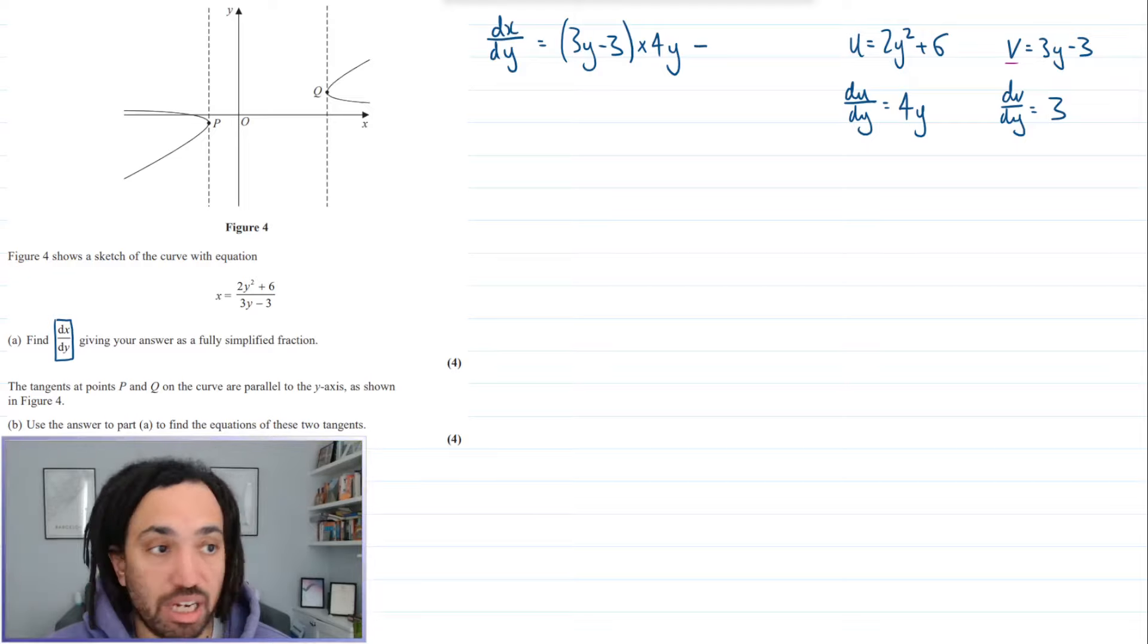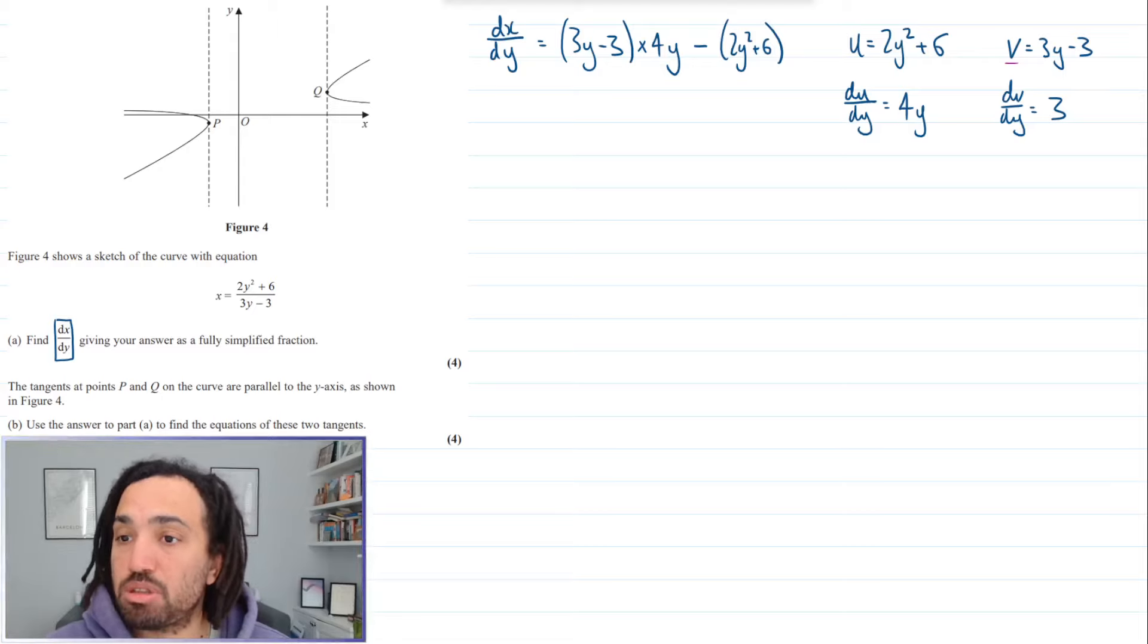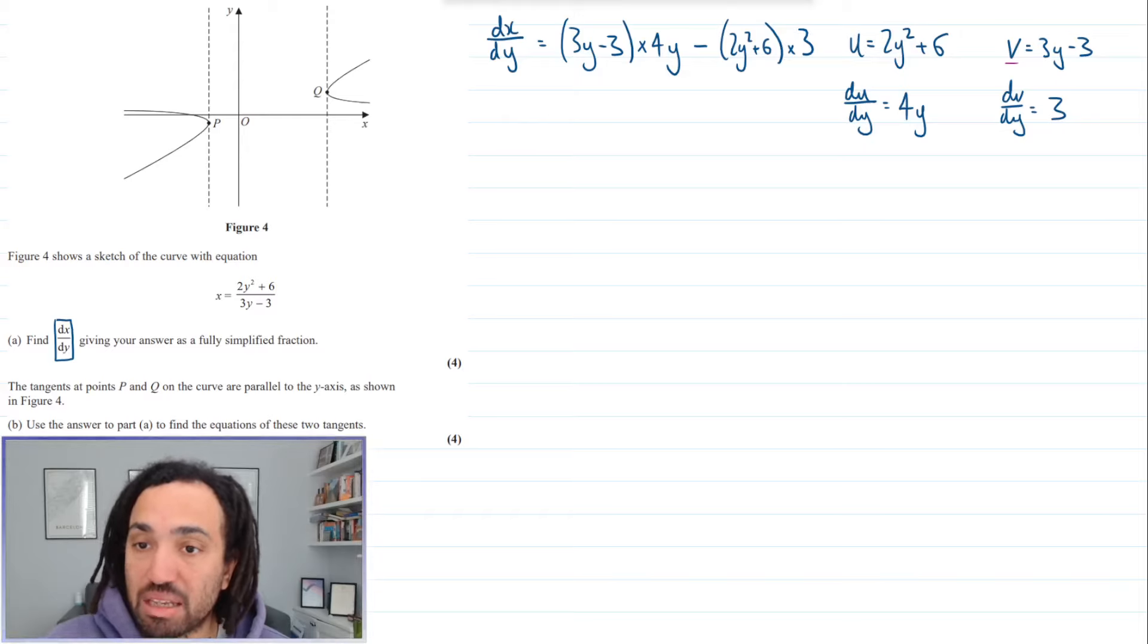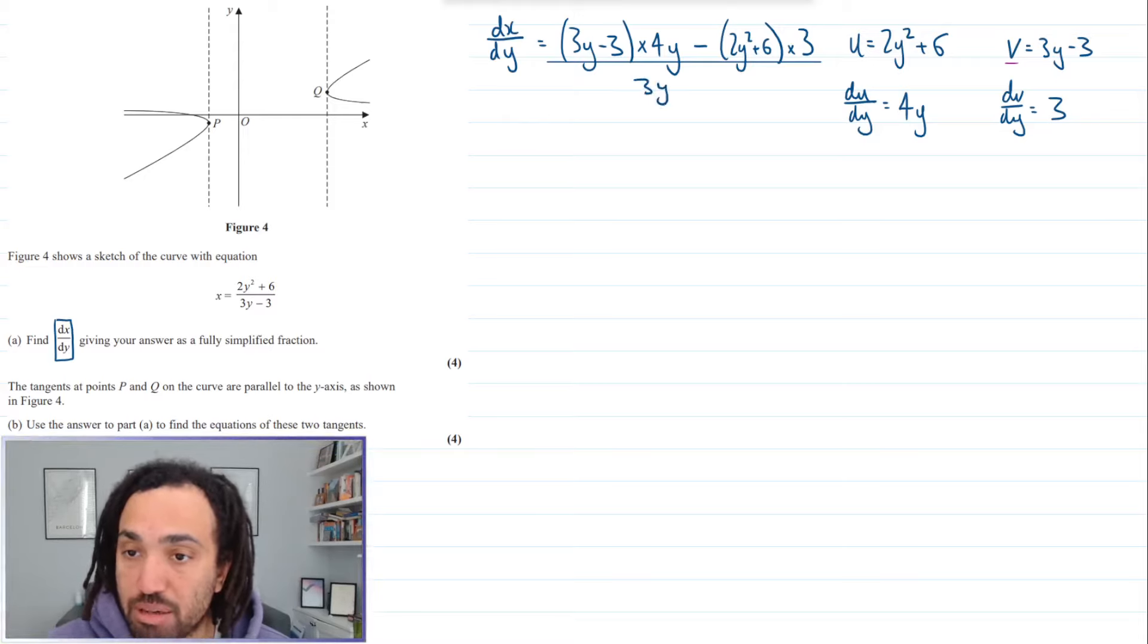And then I always subtract and it's u which is this one multiplied by dv which is 3. And that's all divided by v squared. So 3y minus 3 squared.